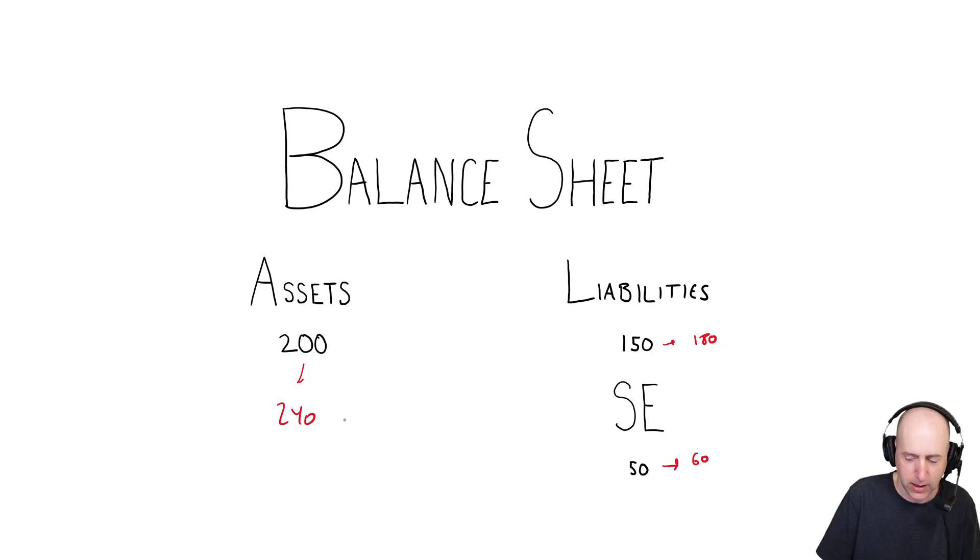240 on the asset side. Assets equals liabilities plus equity, of course. 180 and 60 is 240. Yep, our balance sheet balances. You might think, oh, good job by me, right? My balance sheet balanced, okay, I'm done the exercise.